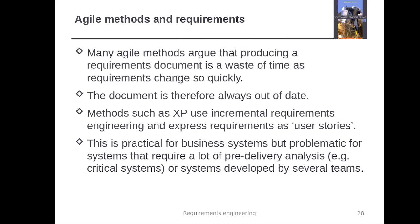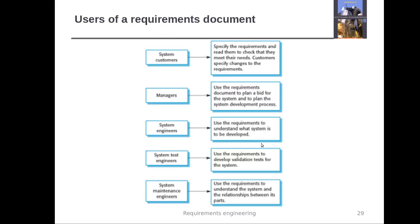There are different kinds of users who interact with a requirements document. System customers specify the requirements, read them to check they meet their needs, and specify changes. Managers use the document to plan the project — effective cost, schedule, and associated activities and tasks. System engineers use the requirements to understand what system is to be developed, what features to include, and what non-functional requirements to consider.